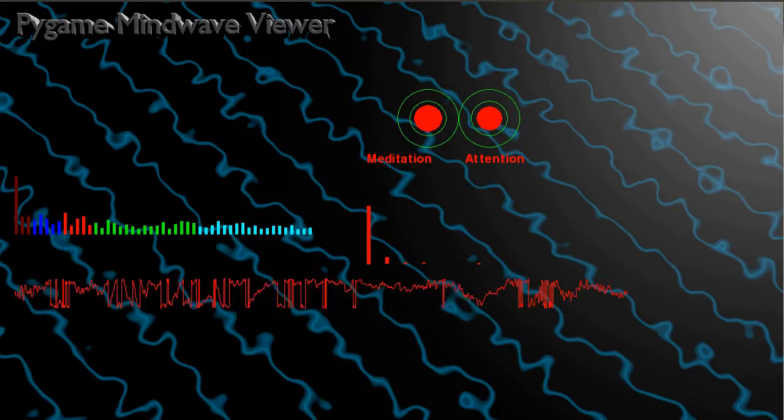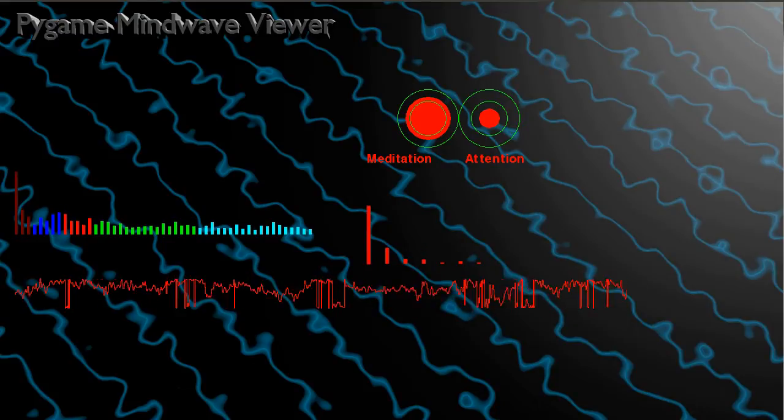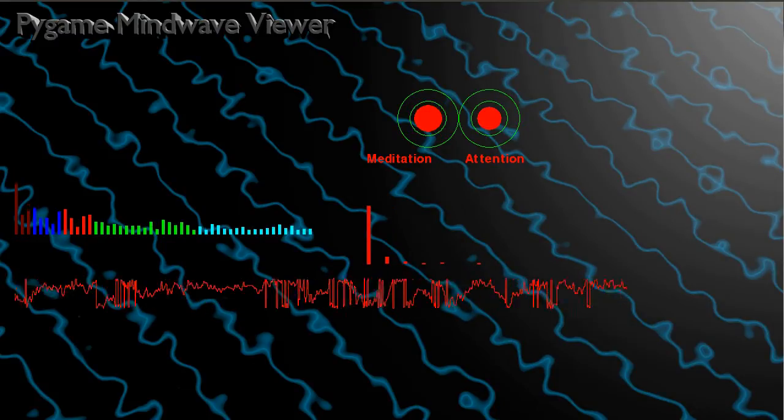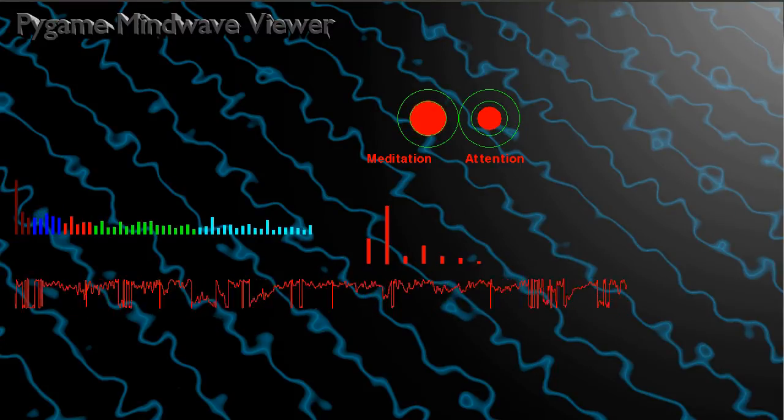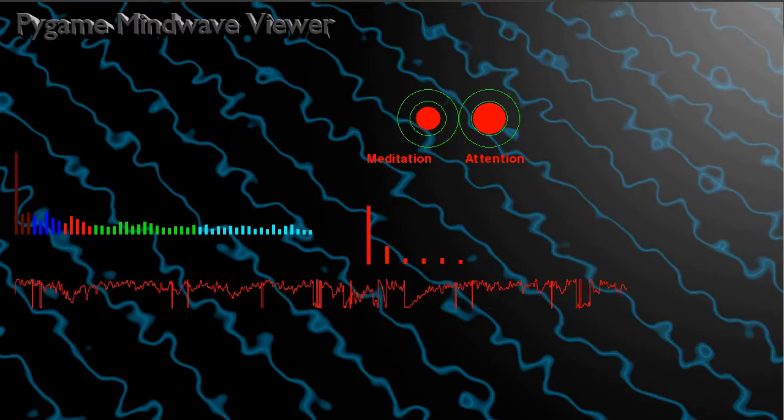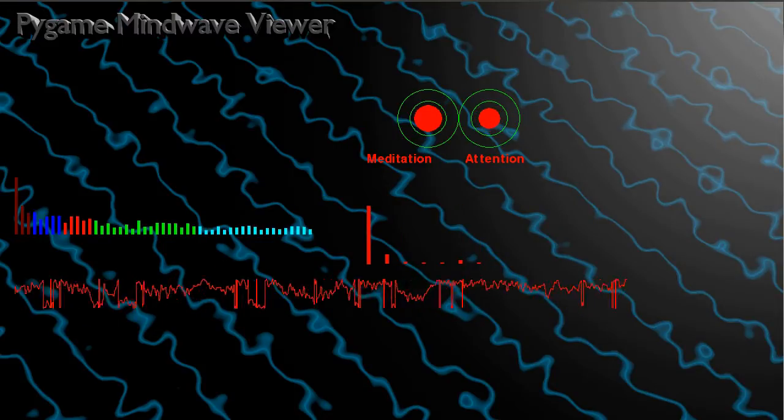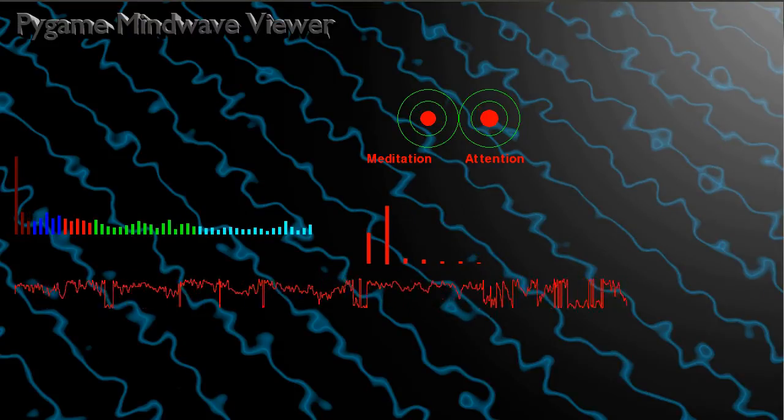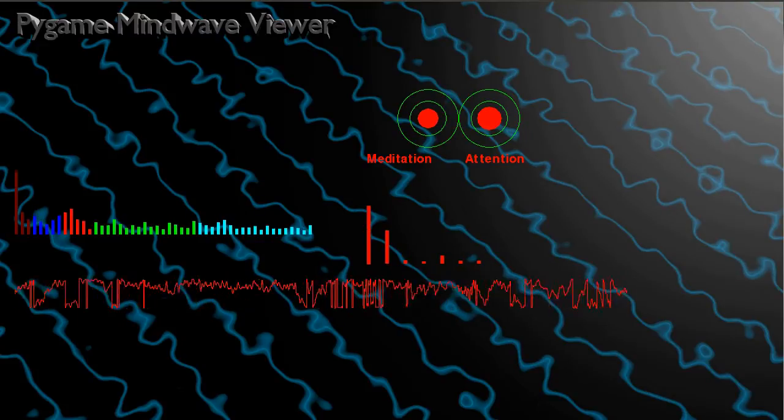And that is the primary use of this device, to use it for some kind of neurofeedback. For example, you can enhance the concentration that you have by trying to keep attention high. Or you can do meditation, you can try to increase theta or beta or alpha frequency bands, whatever you really like.